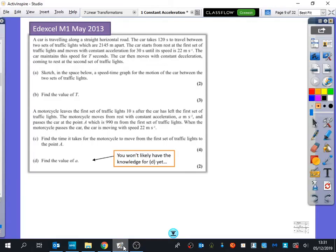Okay, so if we have a look at this one that you had for homework. It says a car is travelling along a straight horizontal road. It takes 120 seconds to travel between two sets of traffic lights which are 2,145 metres apart. Right, now we get to the interesting part.